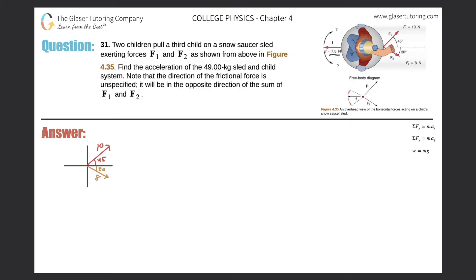Problem 31: Two children pull a third child on a snow saucer sled, exerting forces F1 and F2 as shown from above in Figure 4.35. Find the acceleration of the 49-kilogram sled and child system. F1 is pulling at an angle of 45 degrees north of east with a magnitude of 10 newtons. F2 is pulling at an angle of 30 degrees south of east with a magnitude of 8 newtons.